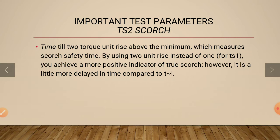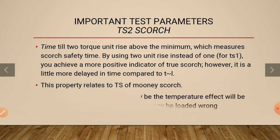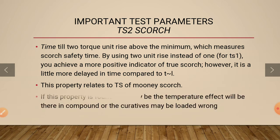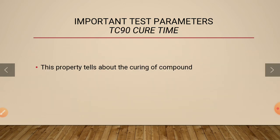Another parameter is scorch TS2. TS2 is taken from the rise of two degrees from minimum torque — it is the safety indicator. It indicates the Mooney scorch parameter and also denotes the safety life of the vulcanization chemicals added to the compound.